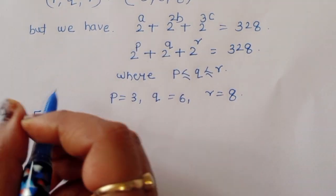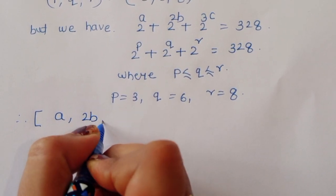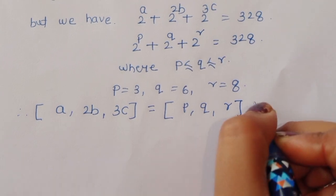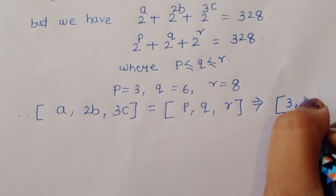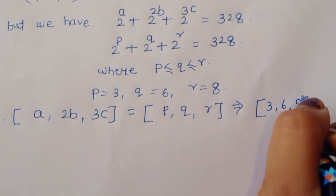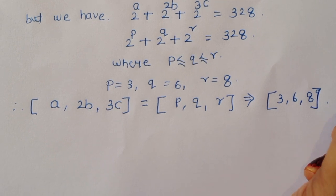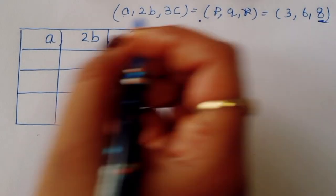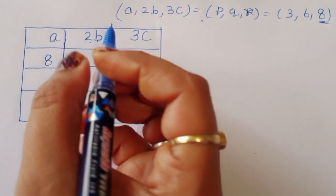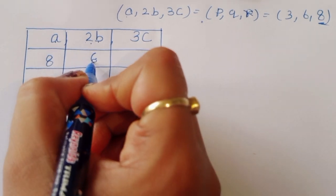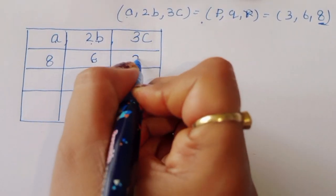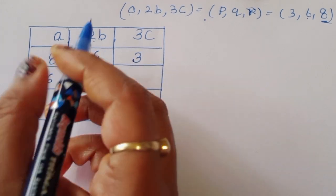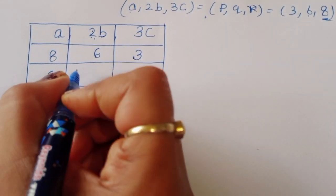We now find A, B, C for each assignment. Case 1: A = 8, then 2B = 6 so B = 3, and 3C = 3 so C = 1. Case 2: A = 6, then 2B = 8 so B = 4, and 3C = 3 so C = 1.